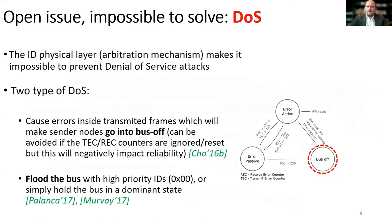Regardless of these previously described security mechanisms, there is one attack that is impossible to stop on CAN buses: denial of service attacks. The reason why this is impossible is because of the physical layer and error confinement mechanism. One way to cause a DoS is by simply modifying a frame during transmission, which will cause transmission errors and will make the sender go to bus off. Another way is by flooding the bus with high priority frames, or even simpler, keeping the bus in a dominant state, which will make it impossible for other nodes to communicate. These issues are due to intrinsic properties of the physical layer and cannot be prevented by traditional security mechanisms.